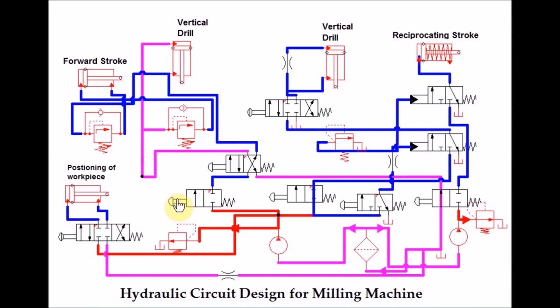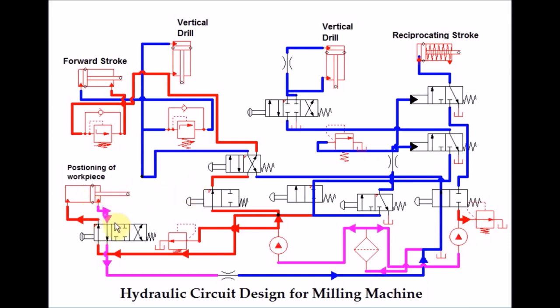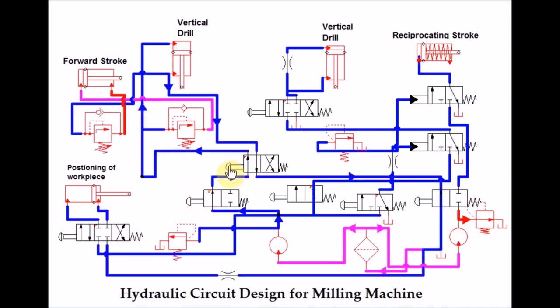So we will activate this. So we can position our workpiece over here. After that we can actuate this. And first it will vertically clamp our workpiece. Then the forward stroke of cutting is done.